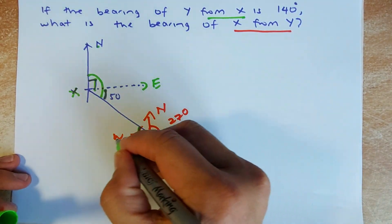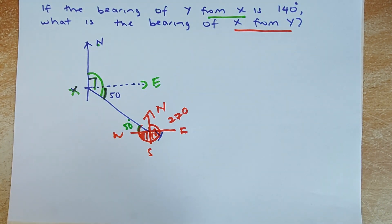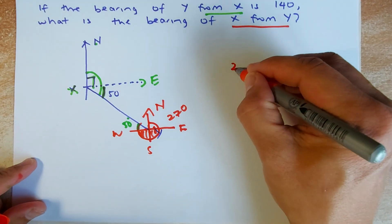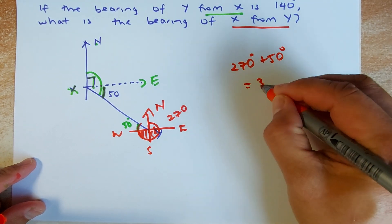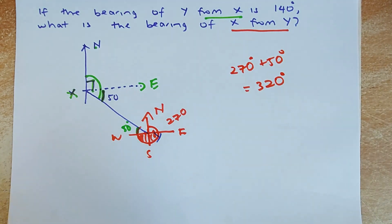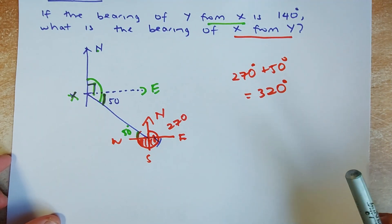That angle is an alternate angle. So if this is 50, that must be 50 degrees. To calculate the bearing you just add 270 degrees plus 50 degrees and the answer is 320 degrees. That is how you calculate the bearing of X from Y.